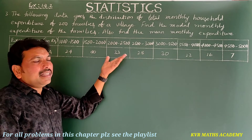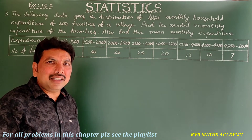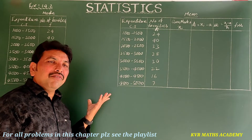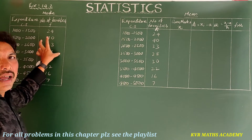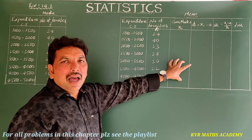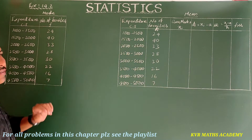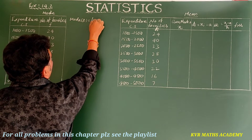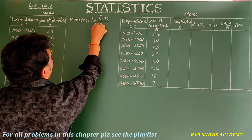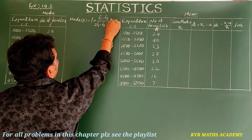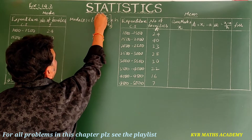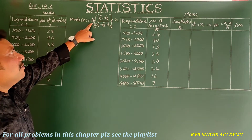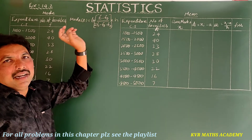For this data we'll find mode and mean. I've drawn two tables — from one I'll find mode and from the other I'll find mean. The formula for mode is: Z = l + [(f1 − f0) / (2f1 − f0 − f2)] × h, where h is the length (size) of the class interval.